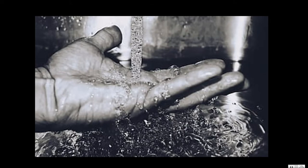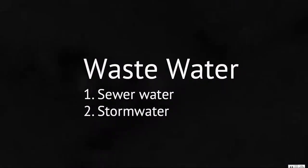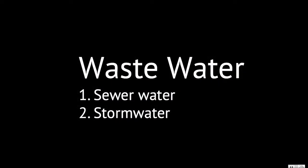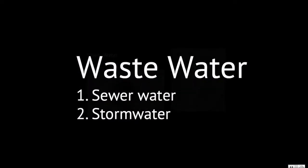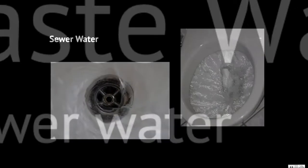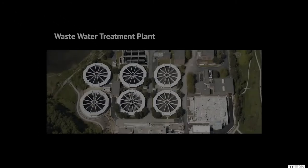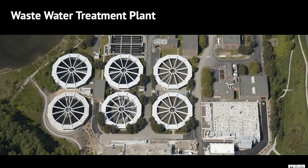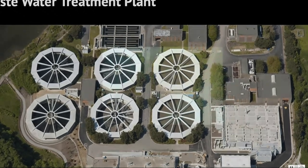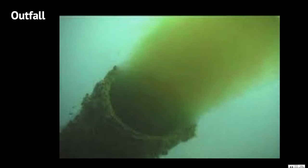There are two different types of wastewater. First, there's sewer water — water that gets flushed down our toilets and goes down our sinks. It then travels to our wastewater treatment plant, where the solids are removed and the water is treated, before being released into Bellingham Bay.